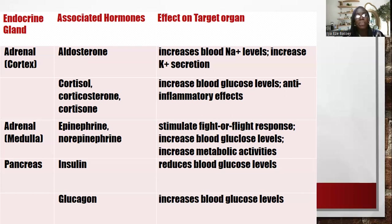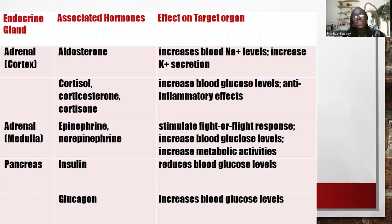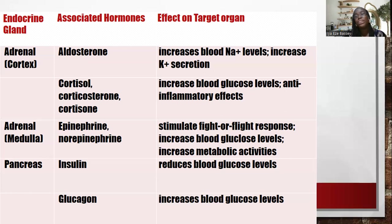The adrenal medulla produces epinephrine and norepinephrine — also known as adrenaline and noradrenaline. Both stimulate the fight-or-flight response, increase glucose levels, and increase metabolic activities. That is why when adrenaline levels are high, you feel stronger, energetic, and activated. The pancreas produces insulin, glucagon, and some amount of somatostatin. Insulin helps to reduce blood glucose levels, while glucagon helps to increase blood glucose levels.